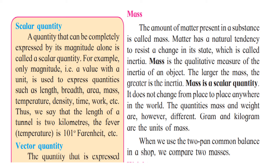Gram and kilogram are units of mass. When we use the two-pan common balance, we are comparing two masses. In one pan, the shopkeeper keeps the standard weight, and in the other, the shopkeeper places the substance. Then there is a comparison — they try to make it equal. Suppose we have to measure one kilo of rice: the shopkeeper keeps the actual mass of one kilo on one side and puts the rice on the other, comparing until they balance.